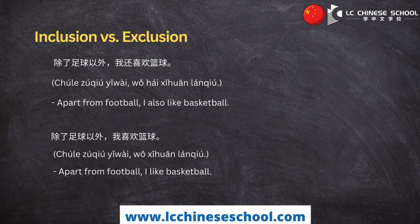For example: 除了足球以外，我还喜欢篮球 (chúle zúqiú yǐwài, wǒ hái xǐhuān lánqiú). It means 'Apart from football, I also like basketball.' This sentence includes both football and basketball in the speaker's interests.